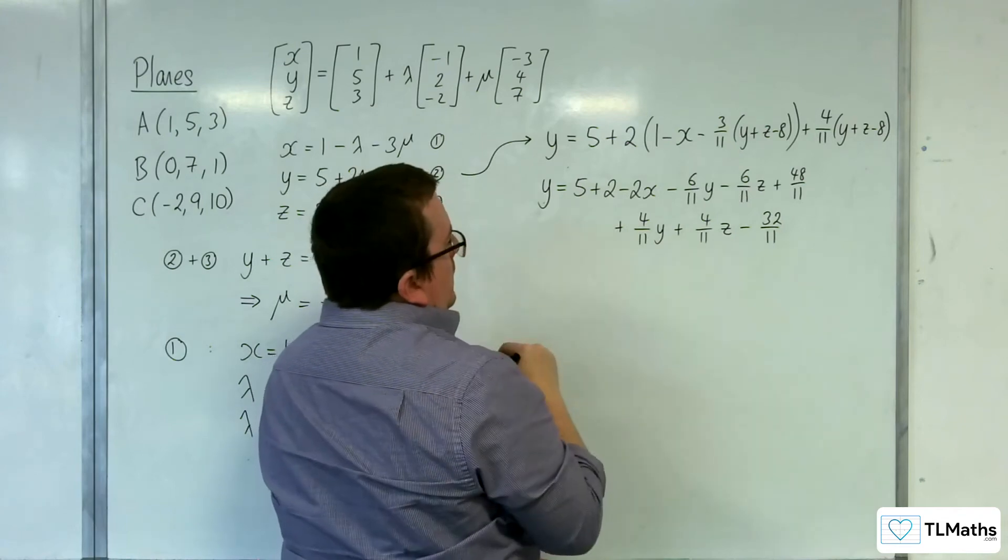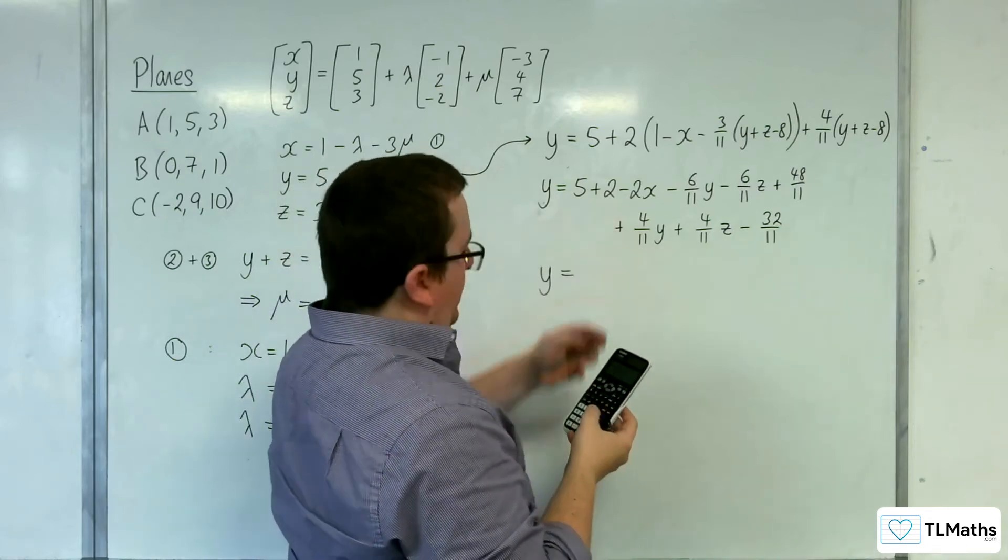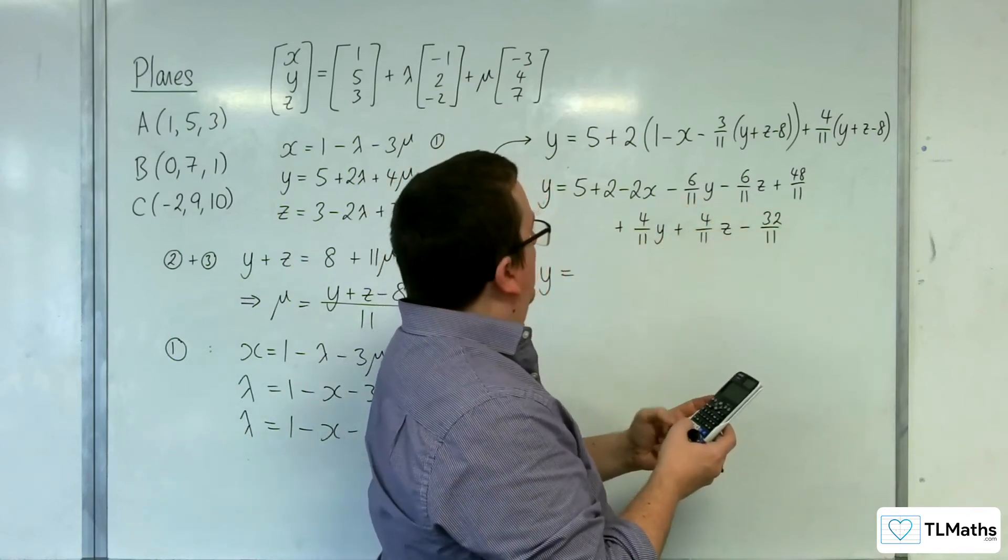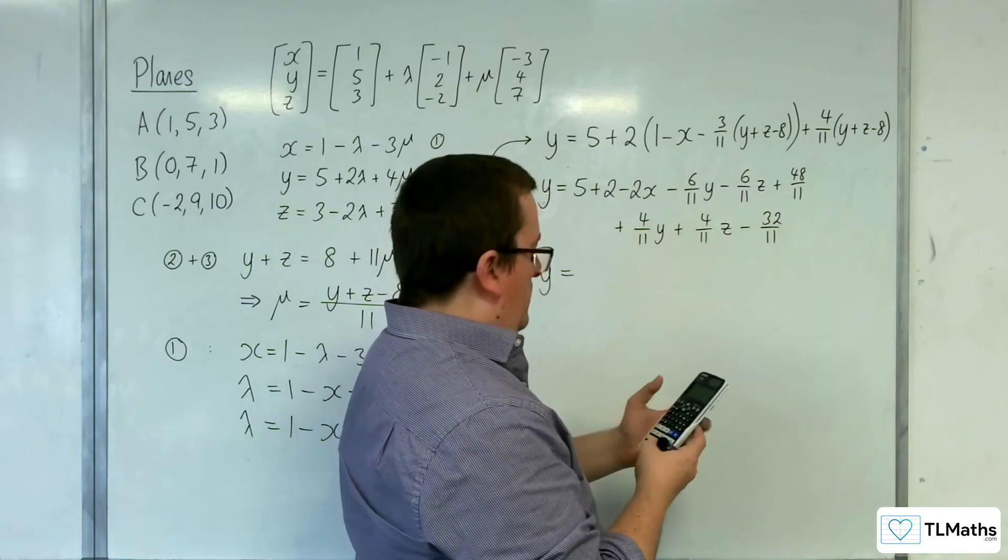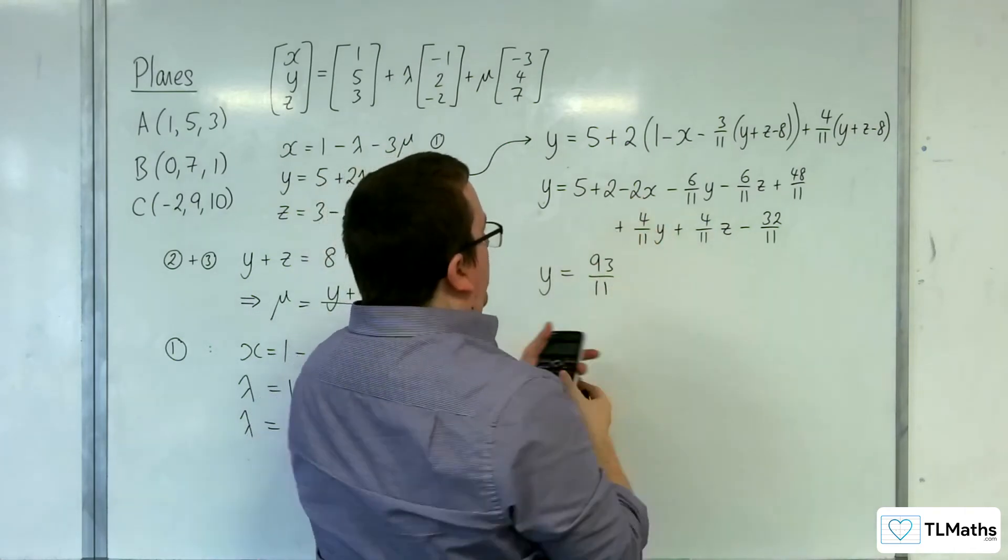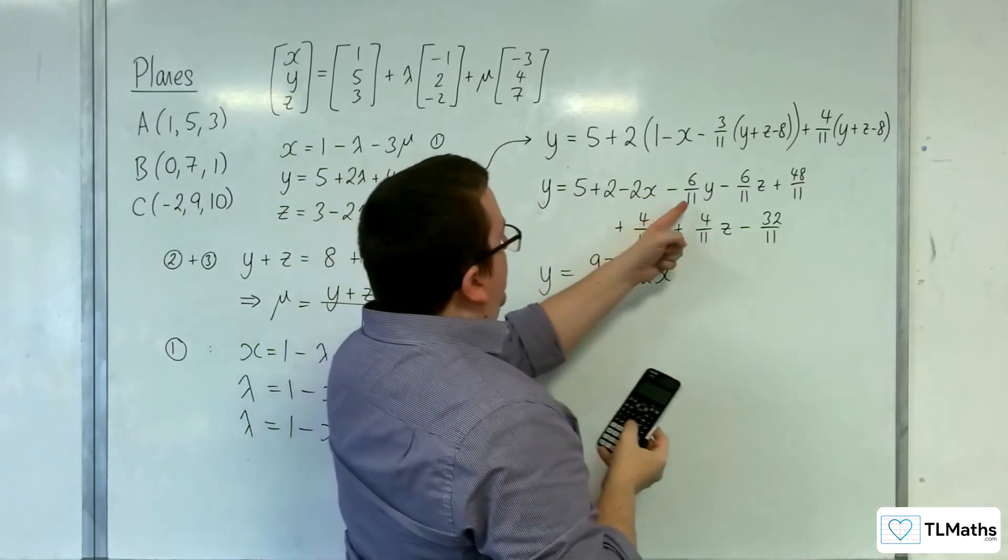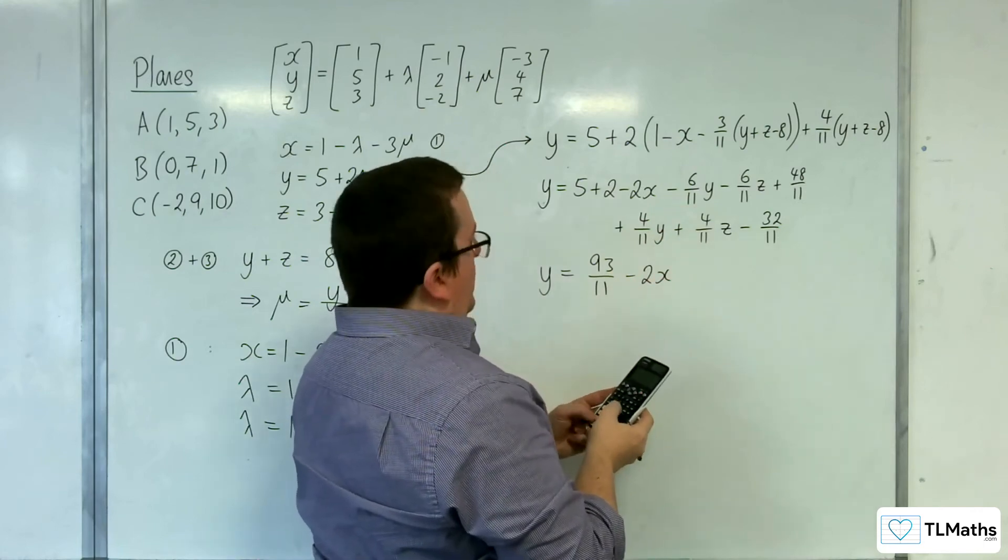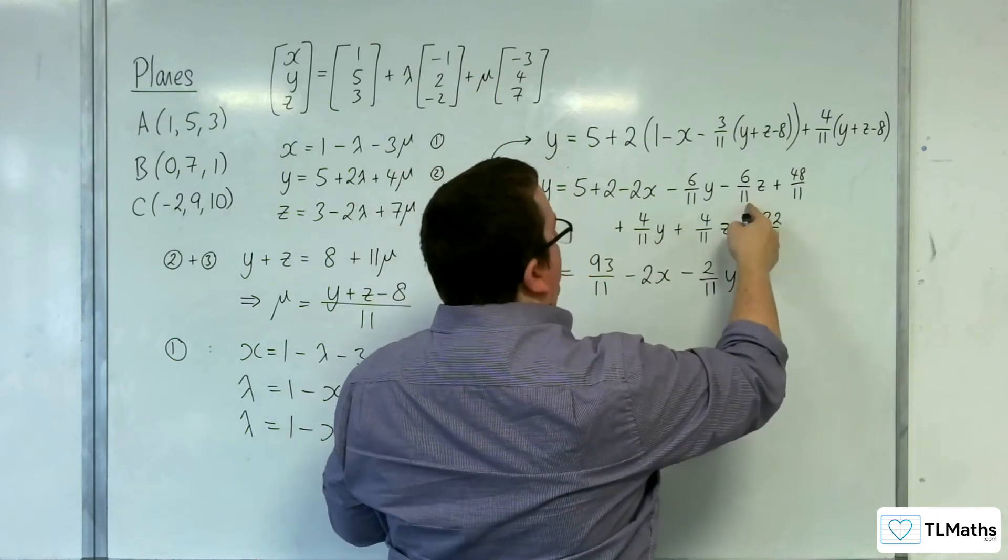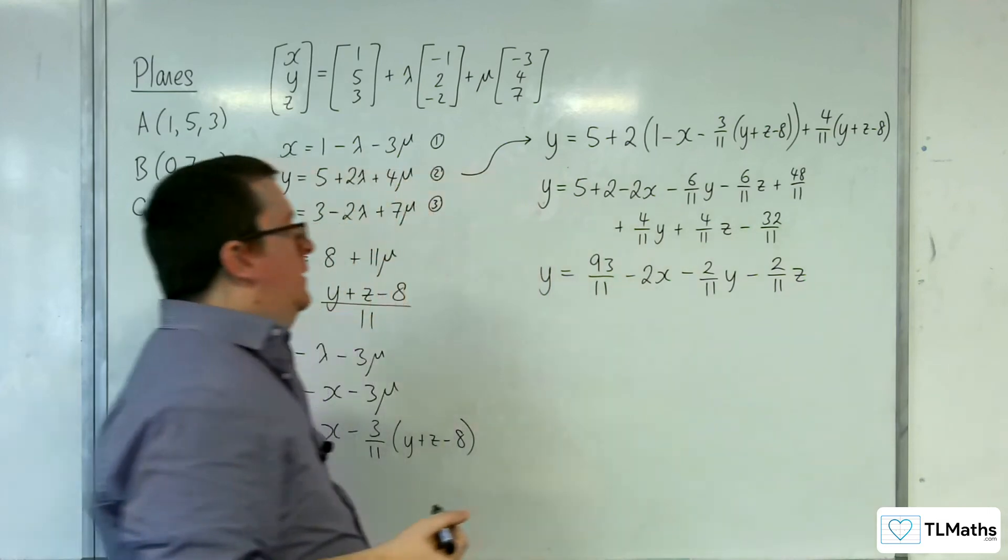So let's simplify the right hand side first. Let's not get ahead of ourselves. Right, we've got the 5 plus 2, then plus 48 elevenths, take away 32 elevenths. So it gets us 93 elevenths. We've then got minus 2x. We've got minus 6 elevenths y plus 4 elevenths, so minus 2 elevenths y, minus 6 elevenths z plus 4 elevenths z would be minus 2 elevenths z.